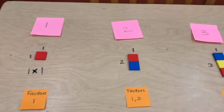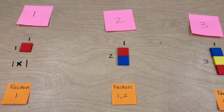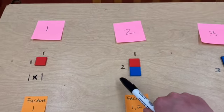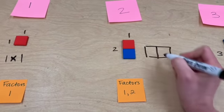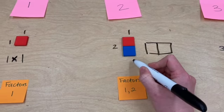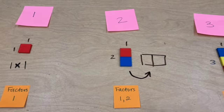Then let's come over to the rectangle with 2 tiles. We could only make one rectangle using 2 tiles and it looks like this: 2 by 1. Now you could have also made it horizontally like this, but we know that that's actually the same rectangle just rotated. It's the same dimensions, the same factors.